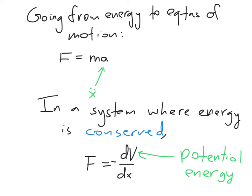Newton's law says F equals mass times acceleration, and acceleration is the second derivative of position. In a system where energy is conserved, we can use potential energy to figure out the force our object is experiencing.